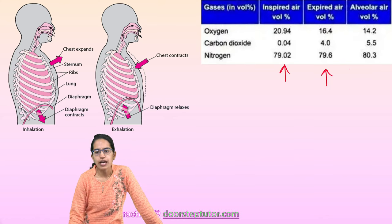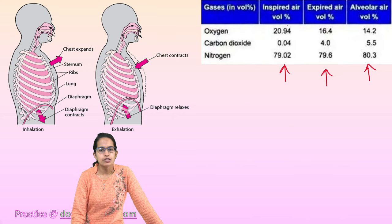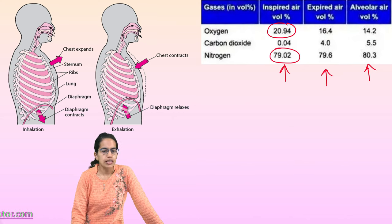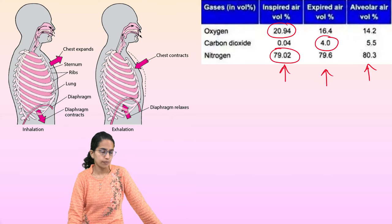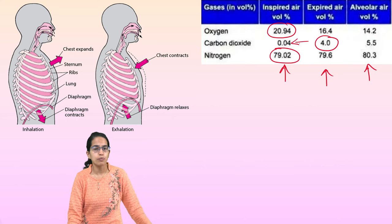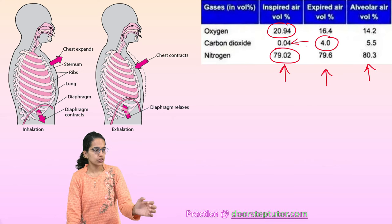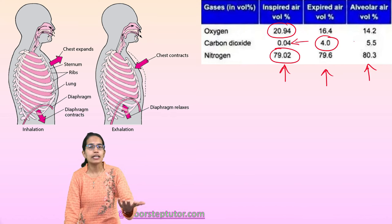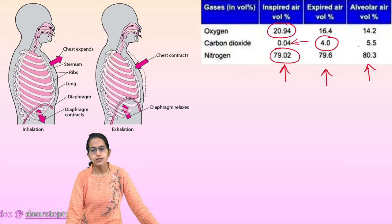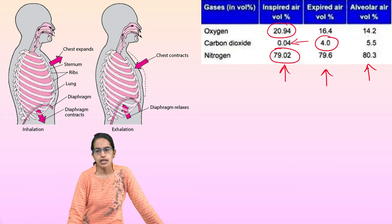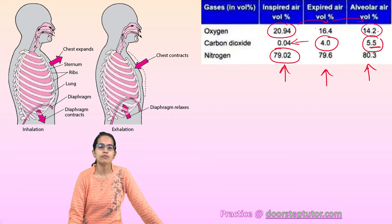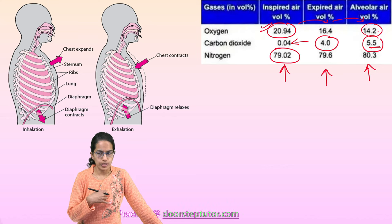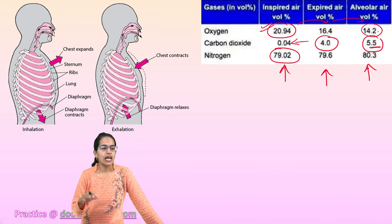Looking at the composition of inspired, expired, and alveolar air: inspired air has about 20% oxygen and 79% nitrogen. Expired air has about 4% carbon dioxide, in contrast to just 0.04% carbon dioxide in the air we inhale. Alveolar air has a very high percentage of carbon dioxide at 5.5%, while its oxygen content is around 14%, compared to 20% in inspired air.